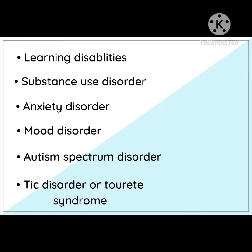The next is autism spectrum disorder — a condition related to brain development that impacts how a person perceives and socializes with others, affecting how they relate to other people. Lastly, tic disorder or Tourette syndrome — a disorder that involves repeated movements or unwanted sounds that can be difficult to control, including sudden repetitive movements or sounds that occur without an apparent cause.